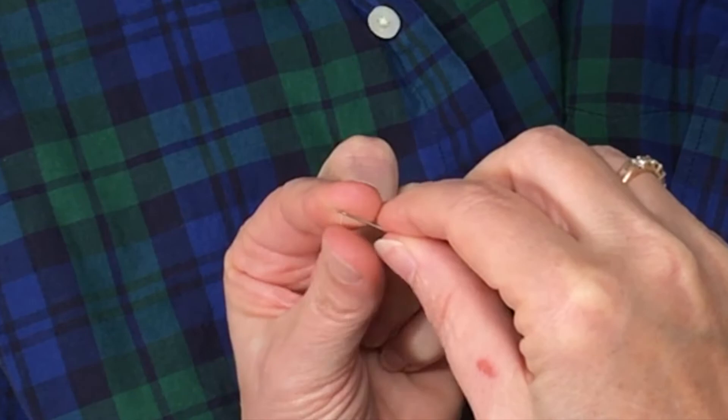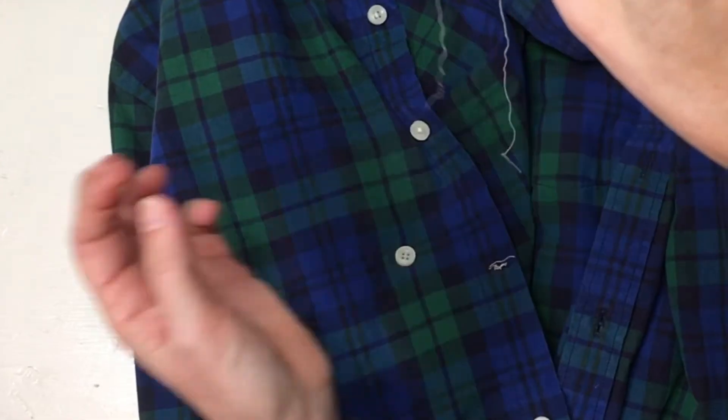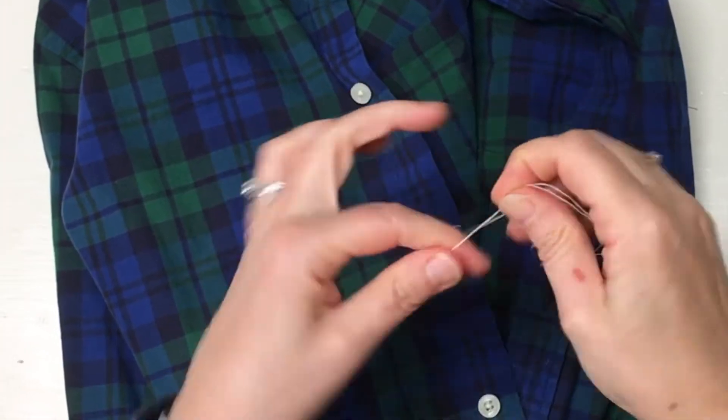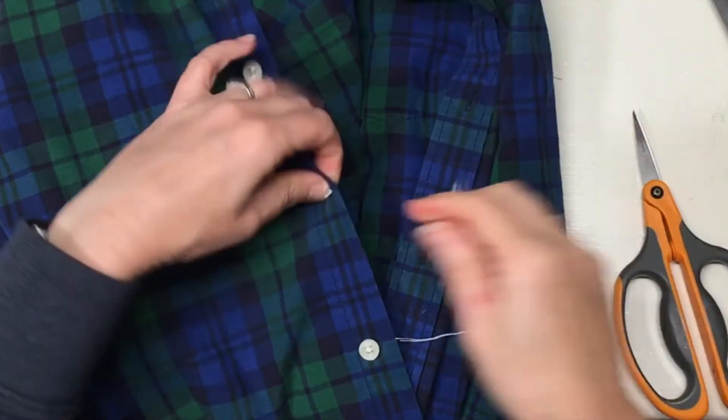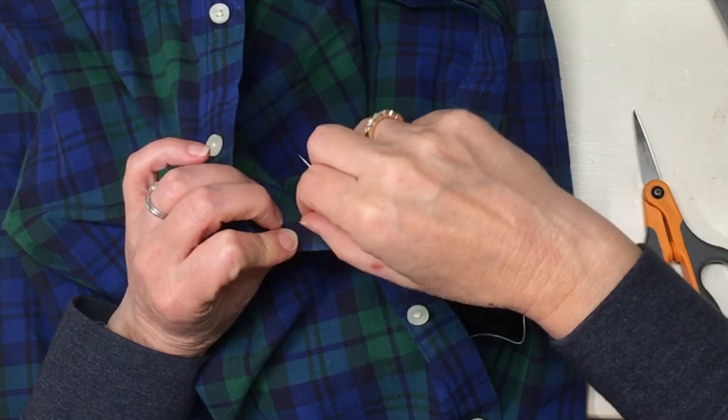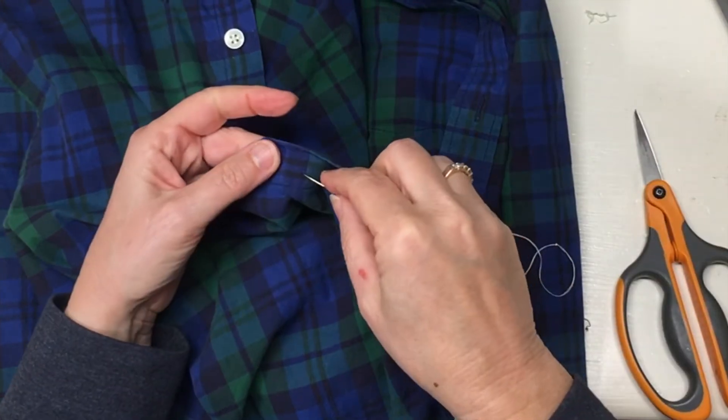Tie a big knot that way it won't pull through. I wrap it around my finger a couple of times, but you want a big enough knot so that it doesn't pull right through. Use the thread that was there from the button that came off. Hopefully you didn't lose the button. If you did, there's some more inside the shirt somewhere.